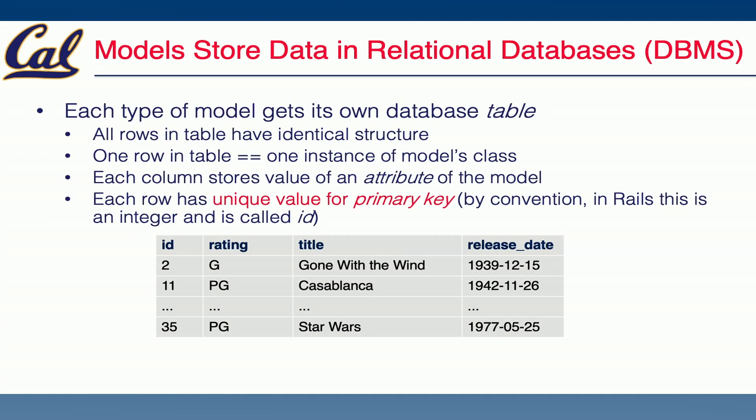Each model in our Rails app is going to get its own database table. So if we have movies, we'll have one table for movies. If we have reviews, we'll have a separate table for reviews. Each row in this table will map to one instance of our model. So when we load movie with ID 2, that's going to be one instance of a model. When we load a different movie, it's a different instance of our class.